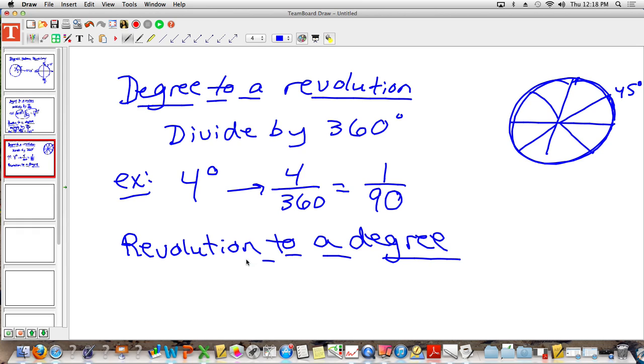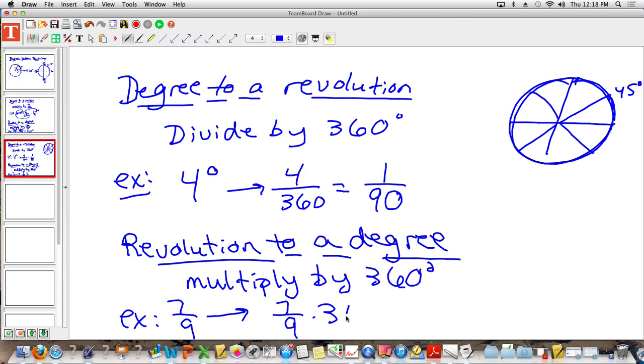One more: revolution to a degree. In other words, you're working backwards. So if you're working backwards, what are you going to do? You're not going to divide by 360. You're going to multiply by 360. So you're going to multiply by 360 degrees. So an example, let's say that you have seven ninths. Seven ninths of a revolution. How many degrees have you traveled if you have went seven ninths of a revolution? Seven ninths. Okay, so you do seven ninths and you multiply by 360, which means you go seven divided by nine times 360. What are you going to get? 280. 280 degrees?